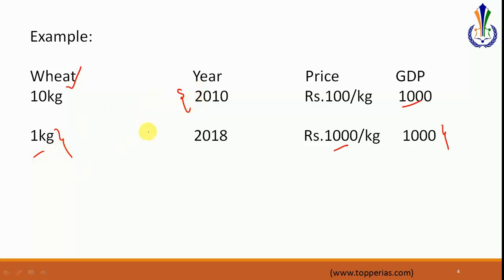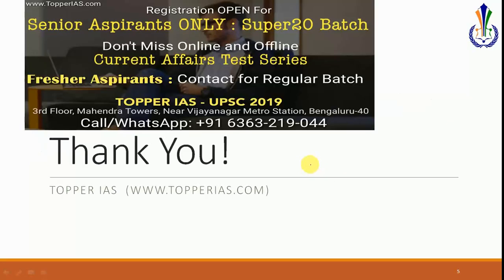Based on this, the GDP will be rupees 100 only. This is the real GDP, and it clearly shows that there is a 10-time fall in GDP between 2010 and 2018. Real GDP gives us more clarity and is a better indicator of national income. That's all for today — thank you all for watching.